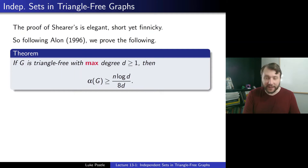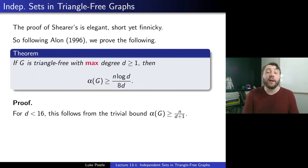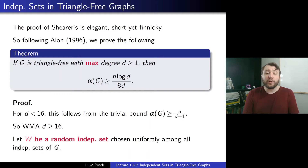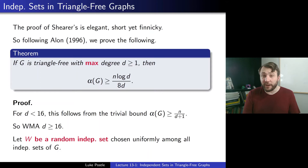Let's begin the proof. For d less than 16, this follows from the trivial bound alpha(G) is at least n/(d+1) — you can check that for d less than 16, that's at least n log d / (8d). So we may assume d is at least 16. Now here's the key setup: we let W be a random independent set chosen uniformly among all independent sets of G. This is a somewhat unusual probabilistic setup since we don't have a grasp of what all independent sets are, but for an existence proof this is a valid probability space.